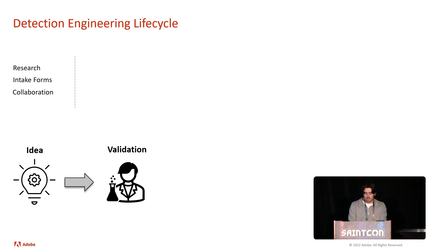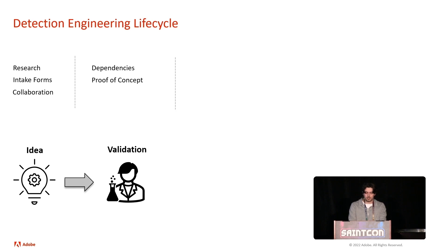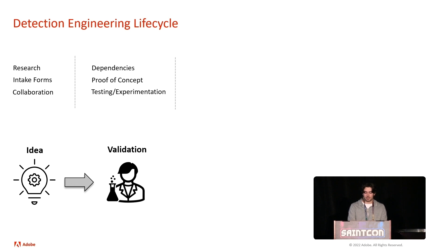What we'll want to do next is validate the idea. We'll want to check for any dependencies — things like different log sources, tools that need to be installed on hosts, things like that. We want to make a proof of concept: build test searches, validate that the idea works within our environment. And then we want to do testing and more experimentation — maybe generate some simulated adversary activity, or if you've had a past incident, take those logs and test your search against them.